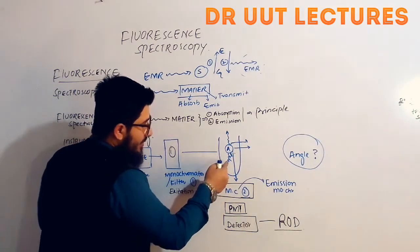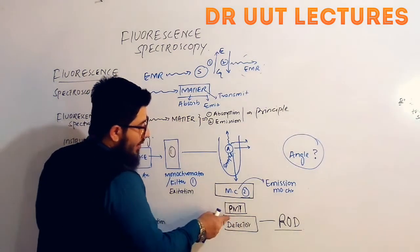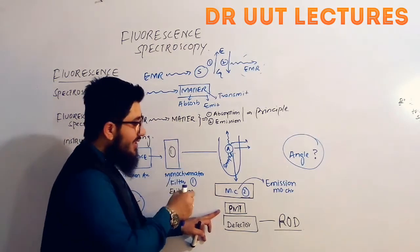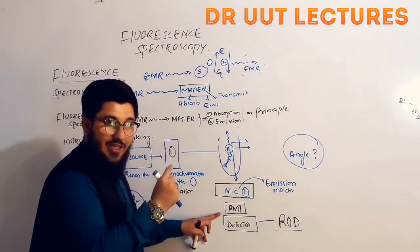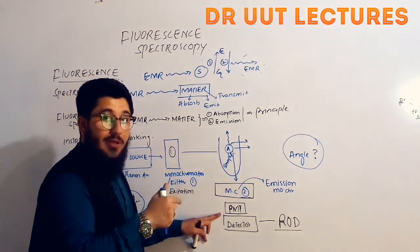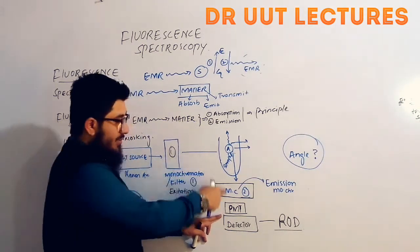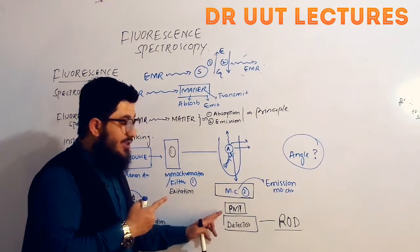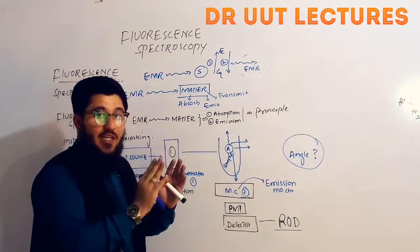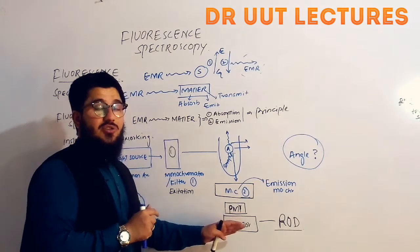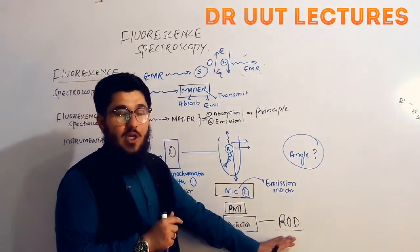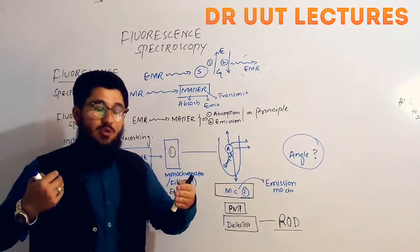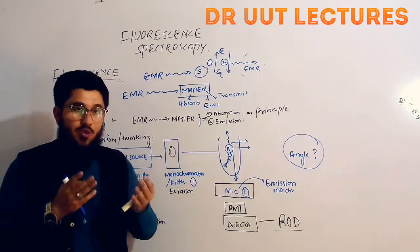These emitted radiations pass through the emission monochromator and then reach the detector, which is the photomultiplier tube. The photomultiplier tube detects the signal and multiplies the photons coming from the radiation. After multiplication, the multiplied photons are converted into an electrical signal by the detector. This signal is then sent to the readout device, which gives us the reading that we match against already-known readings.